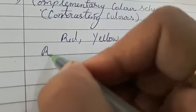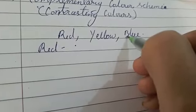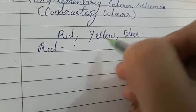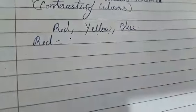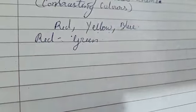Now to find out the contrast color of red, we have to mix the remaining two colors, that is yellow and blue. And you will get the color which is contrast to red. So by mixing yellow and blue, you get green. And hence the contrast of red is green.